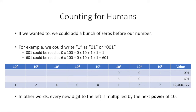If it were 601, it would be 6 times 100, plus 0 times 10, plus 1 times 1. As you go left, each digit gets multiplied by the next power of 10. A number like 12,400,127 is 1 times 10 million, 2 times a million, 4 times a hundred thousand, and so on — all added together. This is how you decompose a number in base 10.